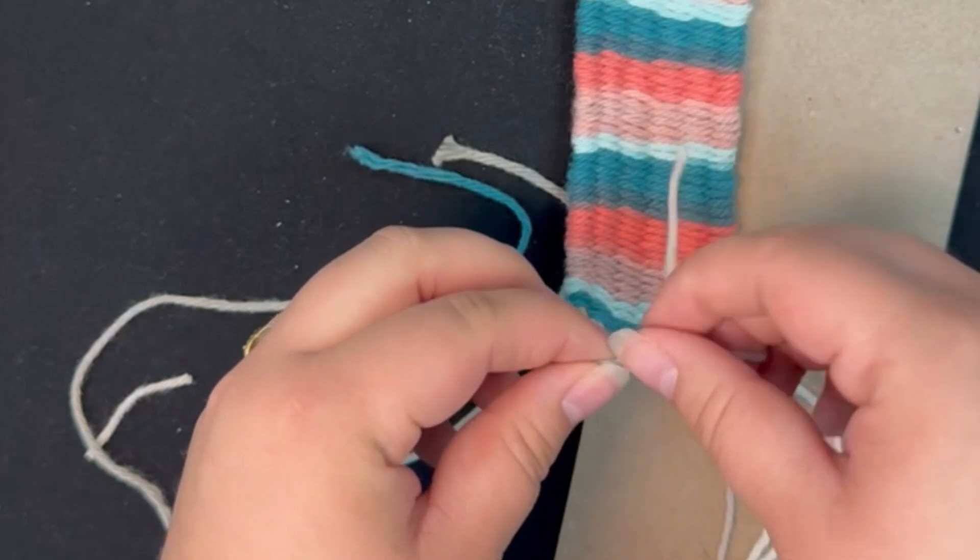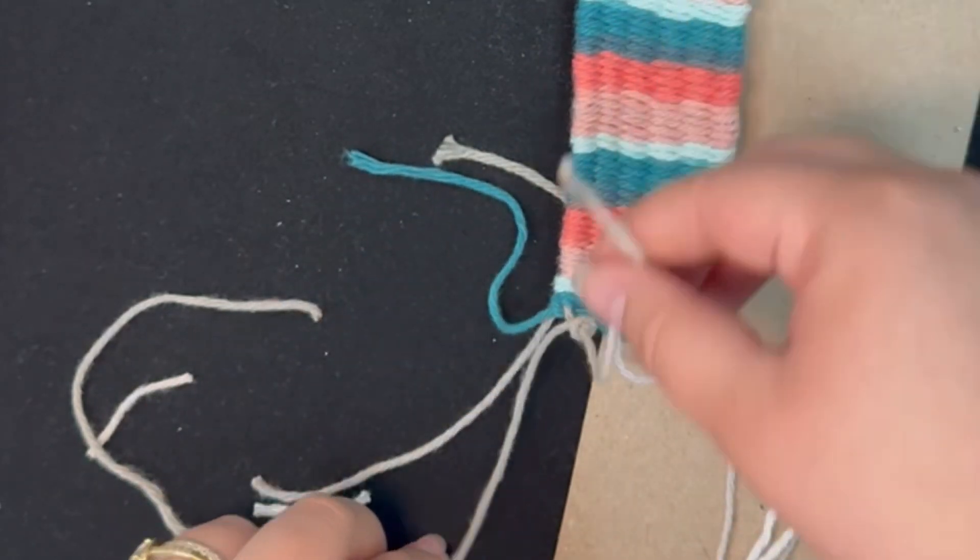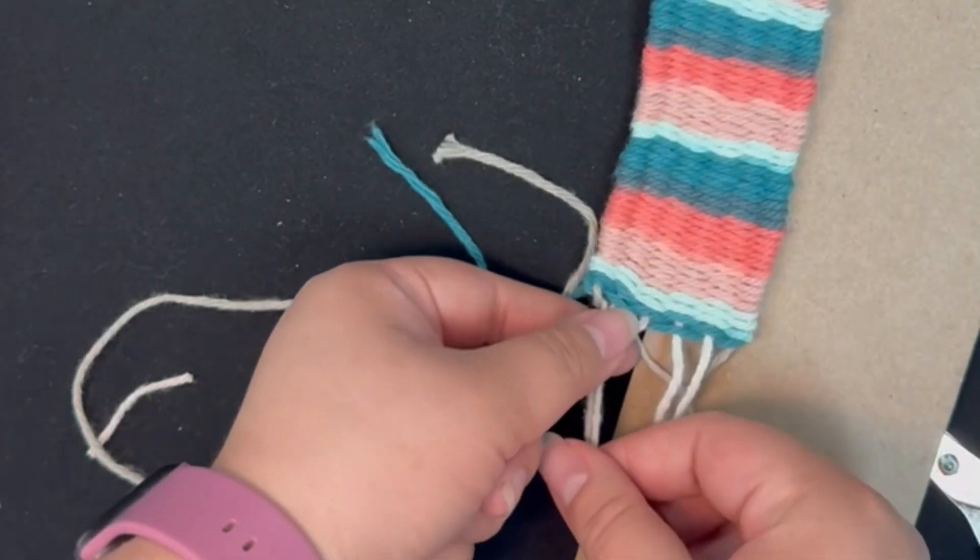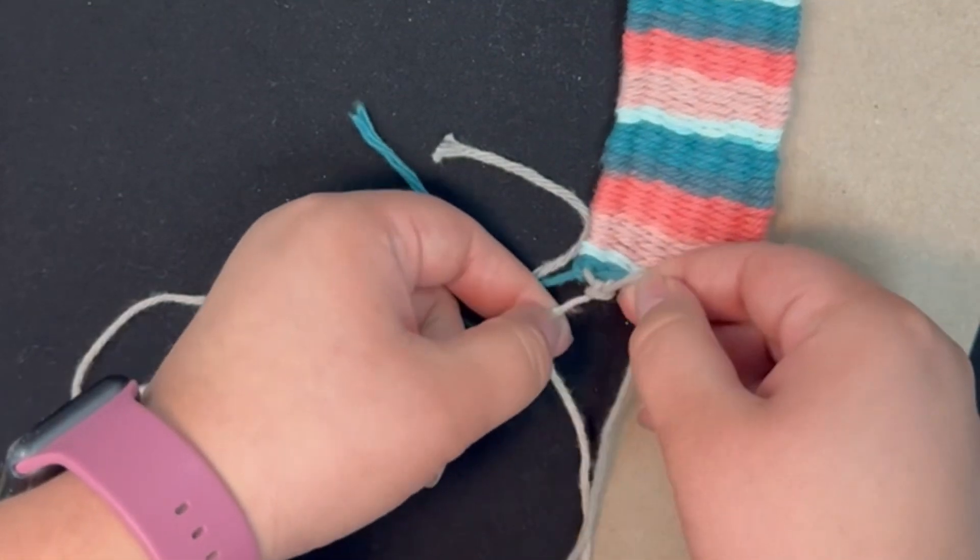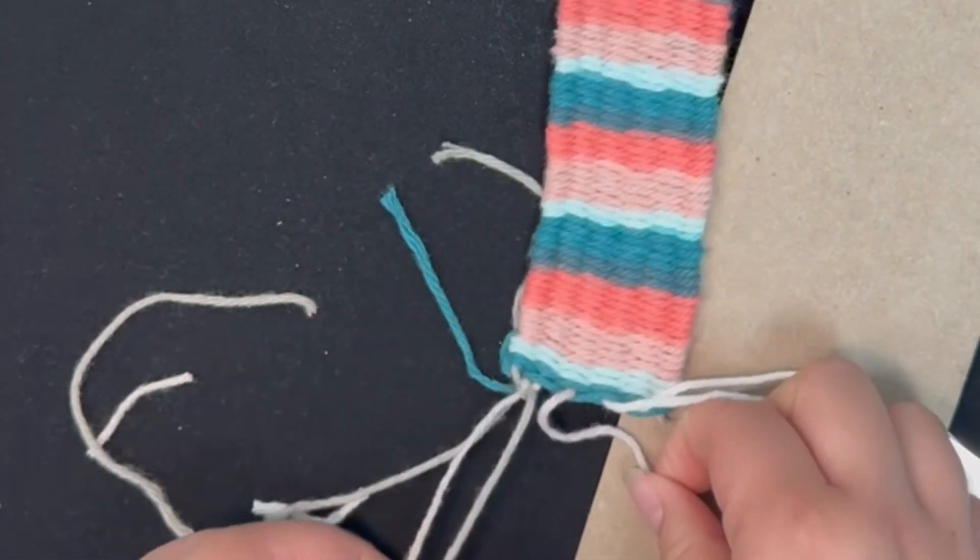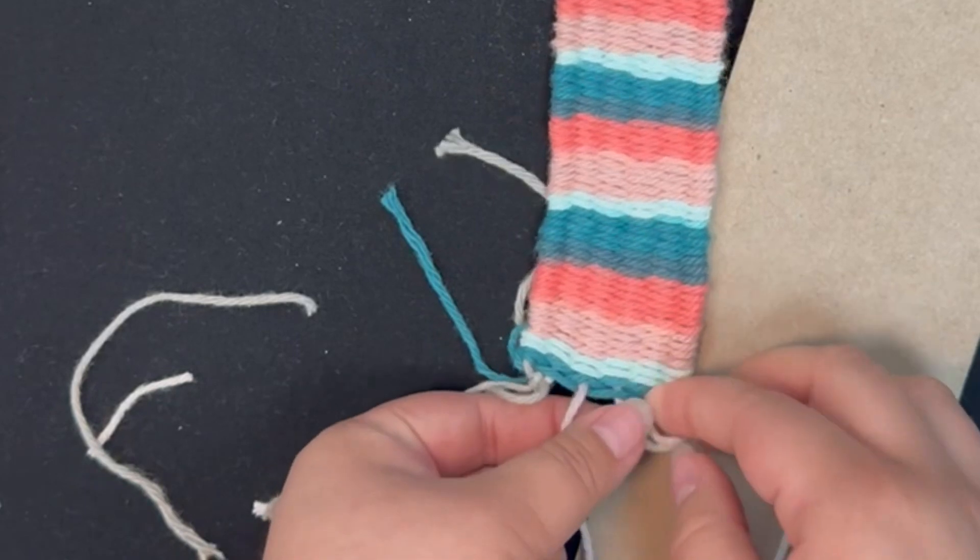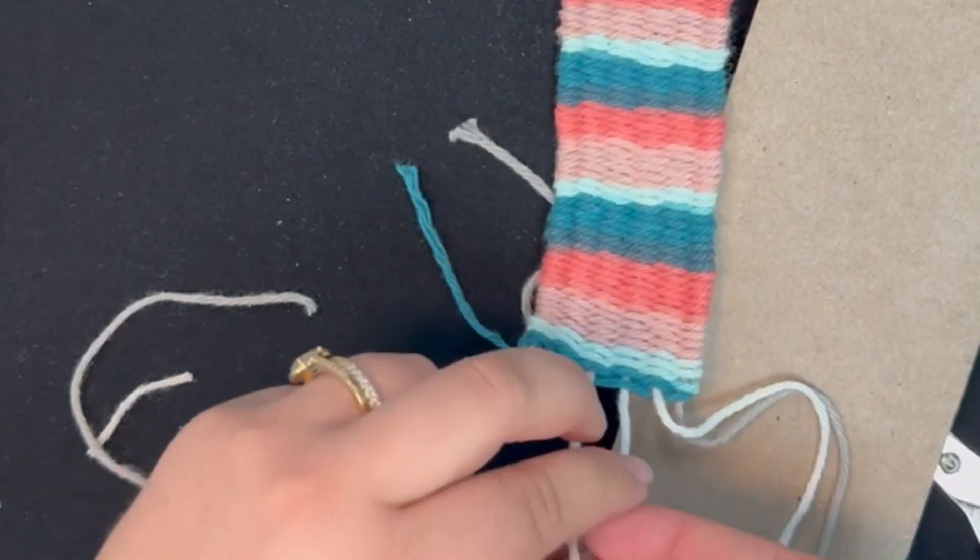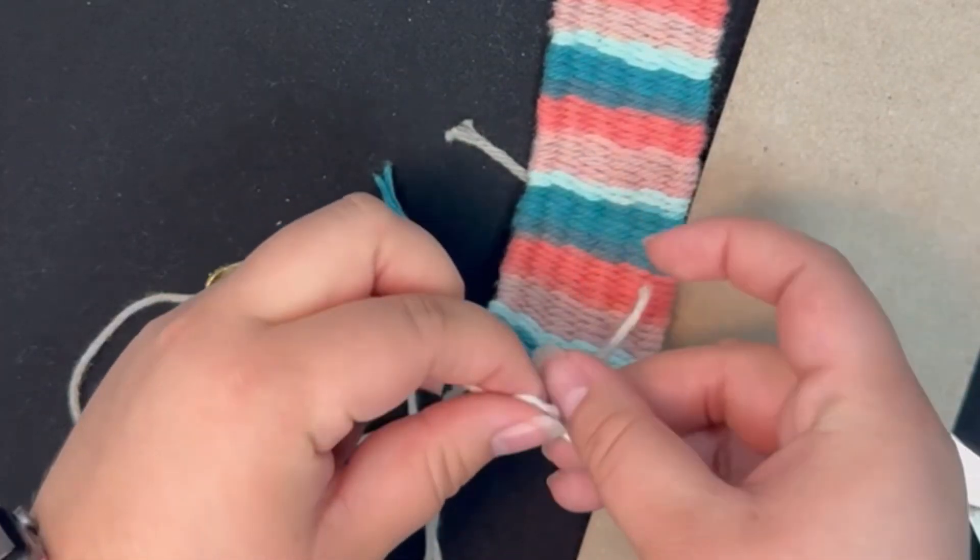You're going to tie off any loose ends at the bottom of your bookmark. Ignore that blue tail just because that is actually going to be cut off in just a moment. Double-knot them just to make sure nothing unravels on your bookmark.